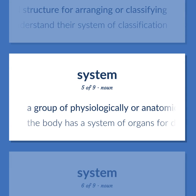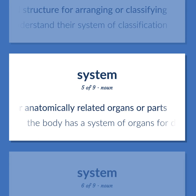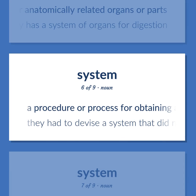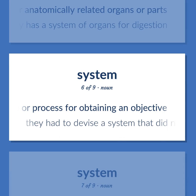System: A group of physiologically or anatomically related organs or parts. The body has a system of organs for digestion. A procedure or process for obtaining an objective.